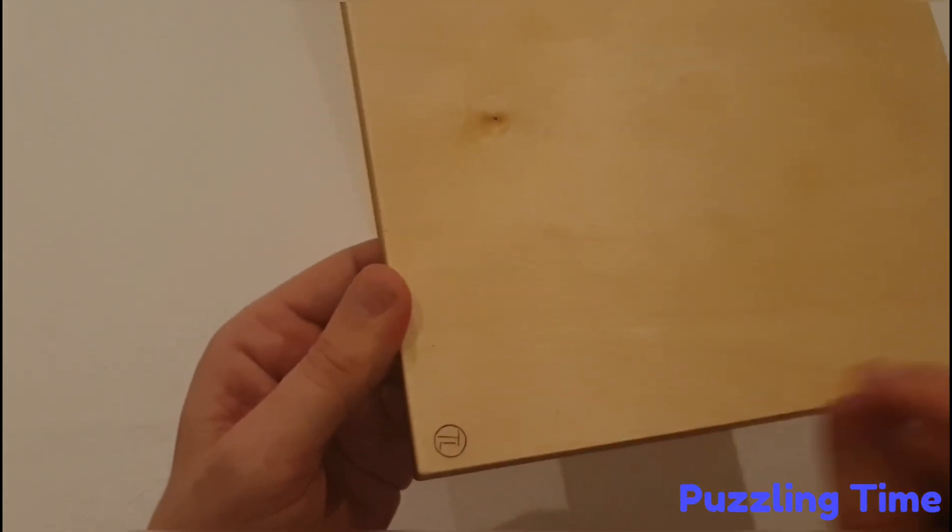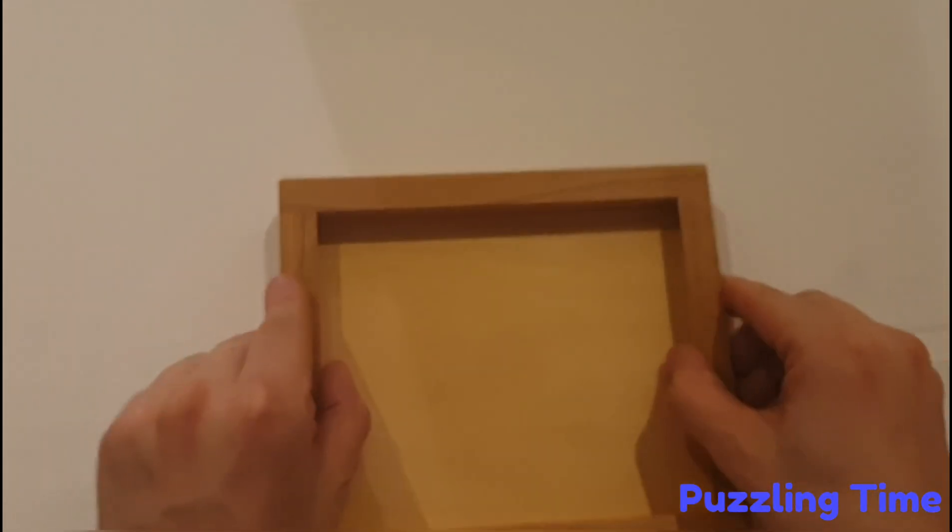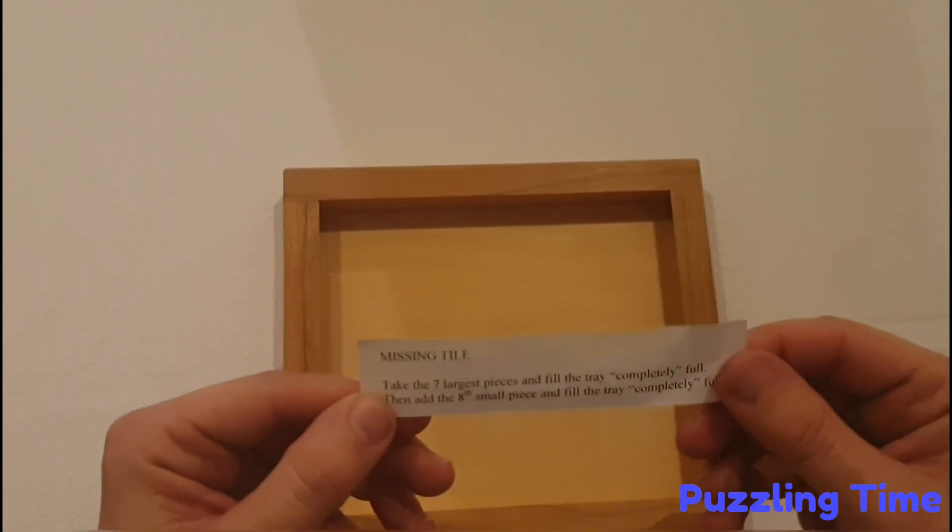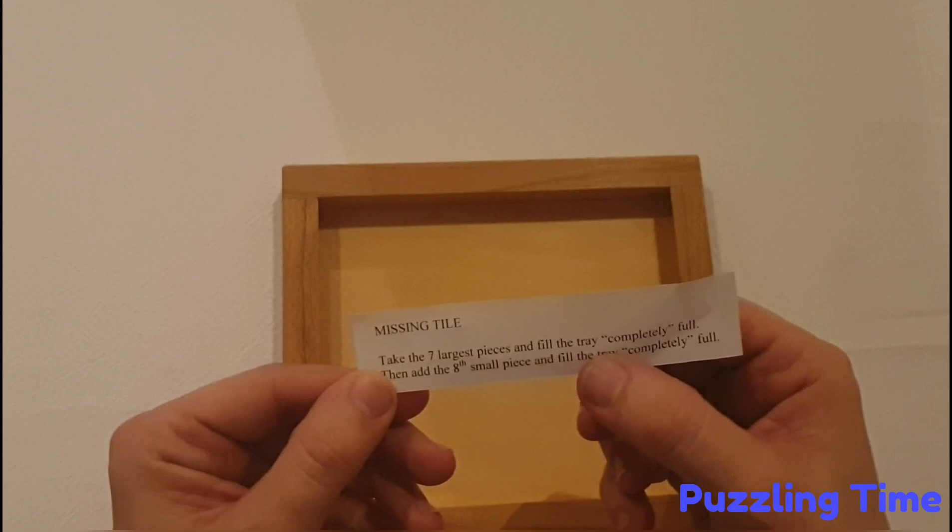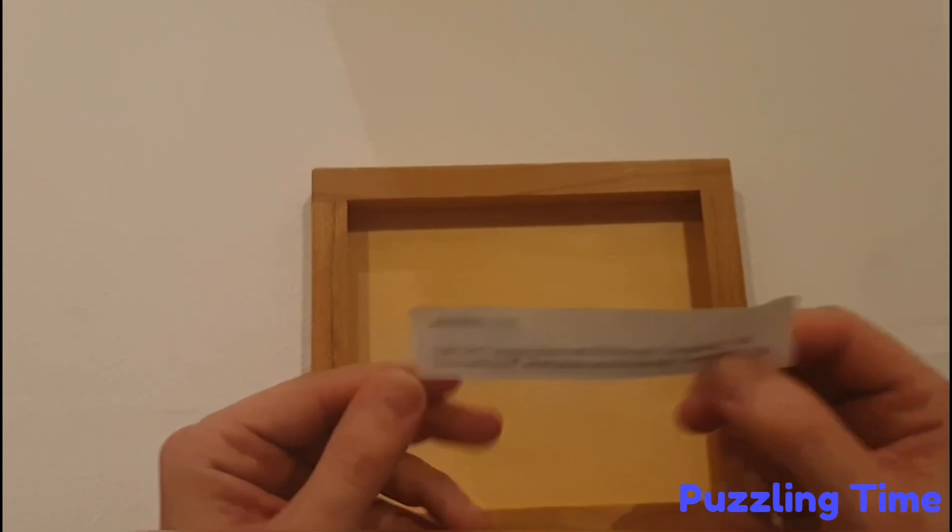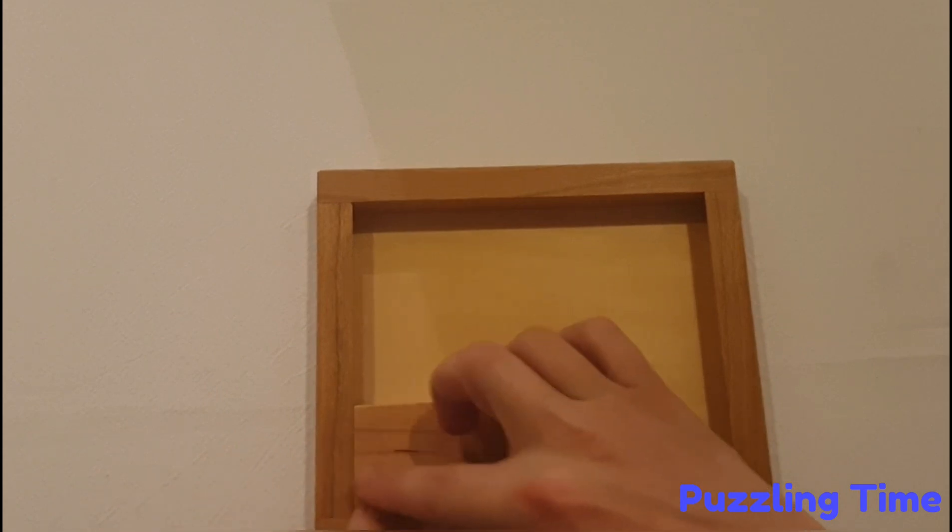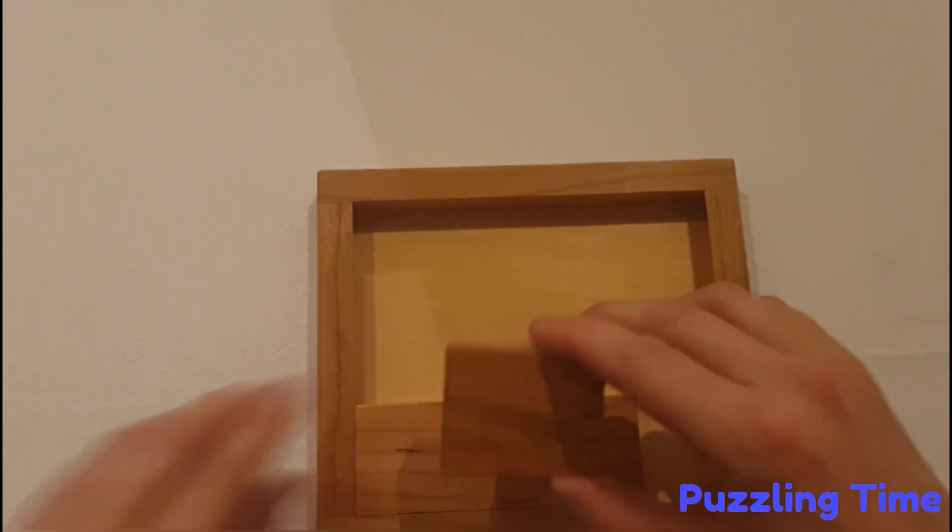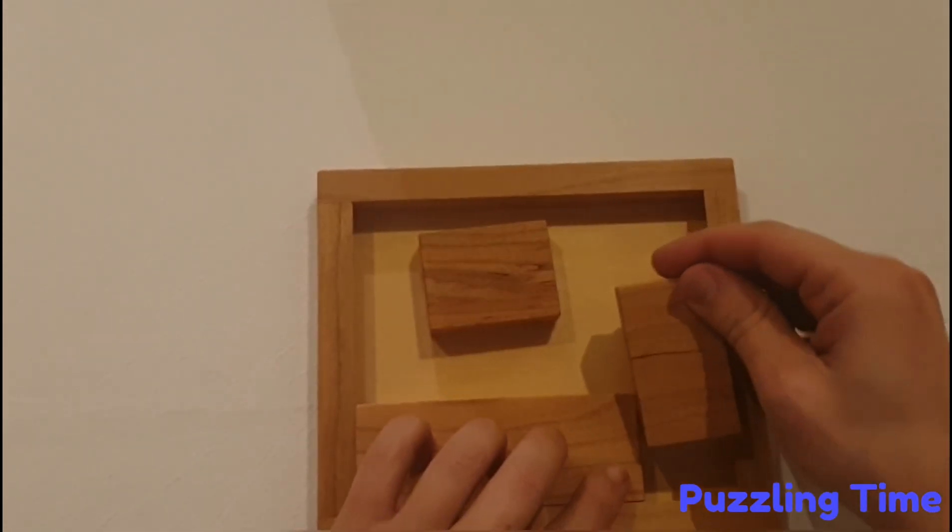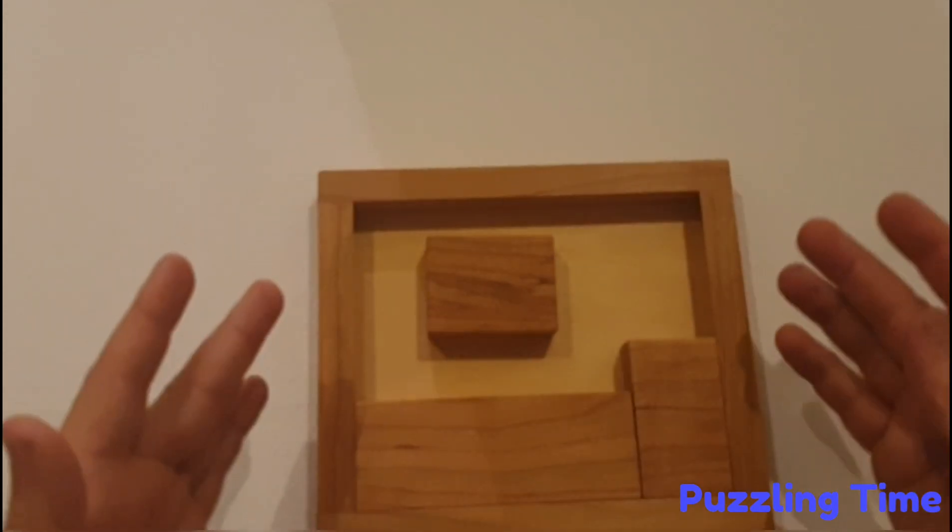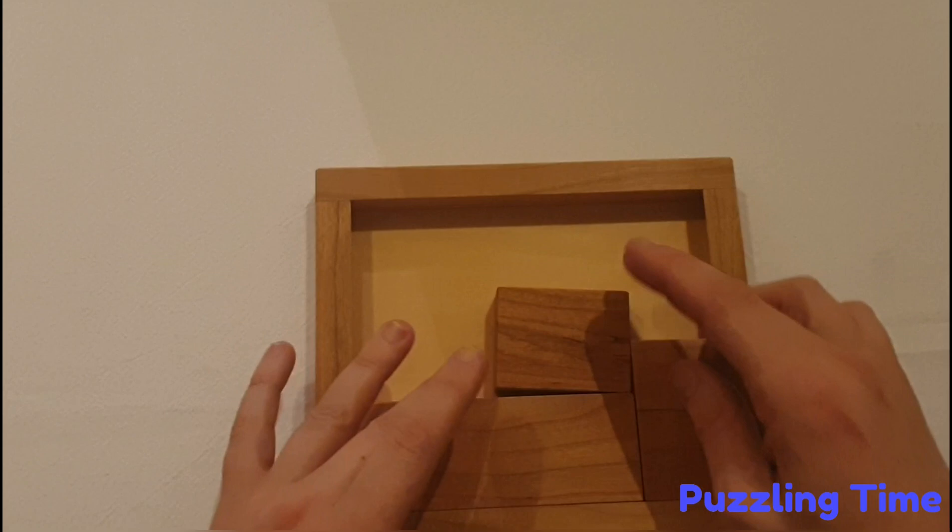Tom does a lot of the Pits and craft work for him, and this puzzle is no different. This has got the Tom Lensch stamp on the back there. It was bought direct from him. The aim of this puzzle is twofold. Firstly, take the seven largest pieces and fill the tray completely full, and by completely full we mean no gaps whatsoever all the way around, so thick pieces fit snugly.